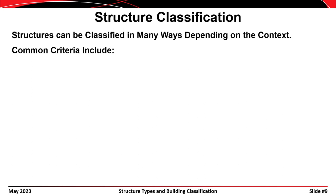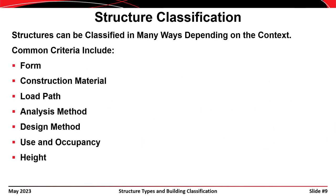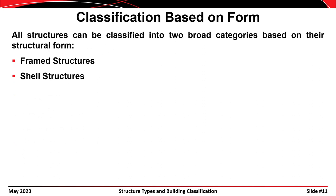Buildings can be classified based on a number of different attributes. Common attributes include the form of the structure, the material from which they're constructed, the load path employed, the method of analysis, the method of design, the use and occupancy, and the height of the structure. Structures can be classified into two broad categories based on their structural form: either a framed structure or a shell-type structure.